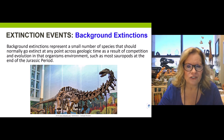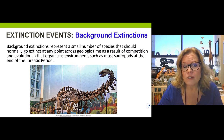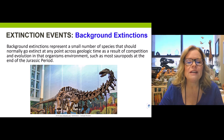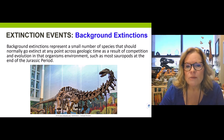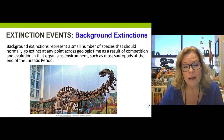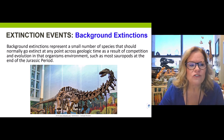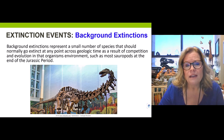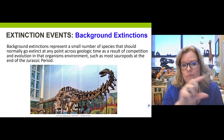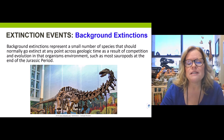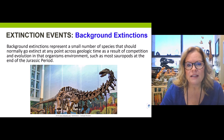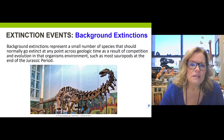There are different types of extinctions, and we'll start with one of the most common: background extinction. These represent small numbers of organisms — that could be plants, microscopic life, macroscopic life, vertebrates, or invertebrates. Essentially, a small group of species can normally go extinct over a period of geologic time as a result of competition and evolution within that same species group. A good example would be sauropods.